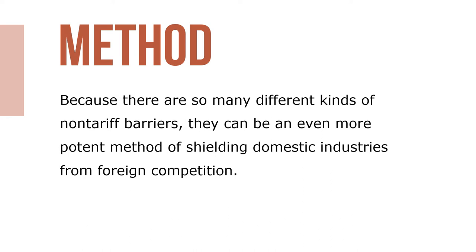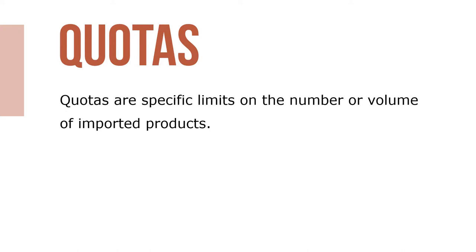Because there are so many different kinds of non-tariff barriers, they can be an even more potent method of shielding domestic industries from foreign competition. Quotas are specific limits on the number or volume of imported products. For example, the Chinese government only allows 34 imported movies per year.